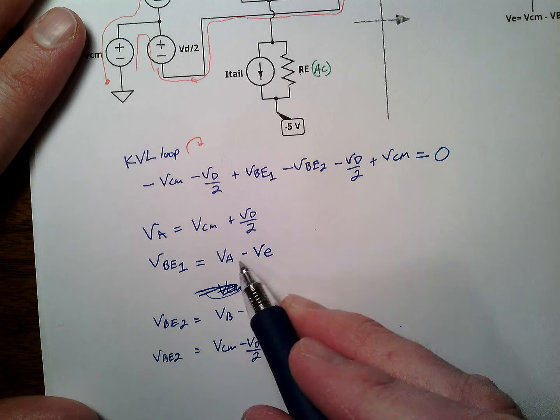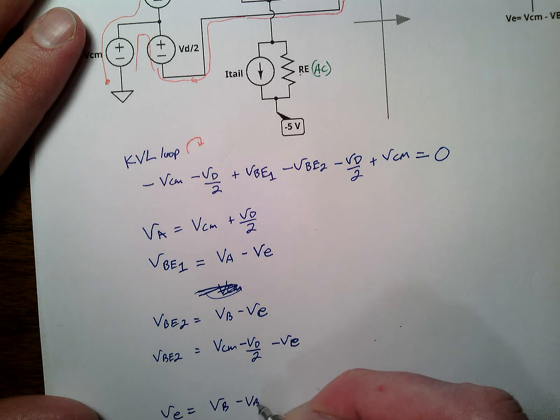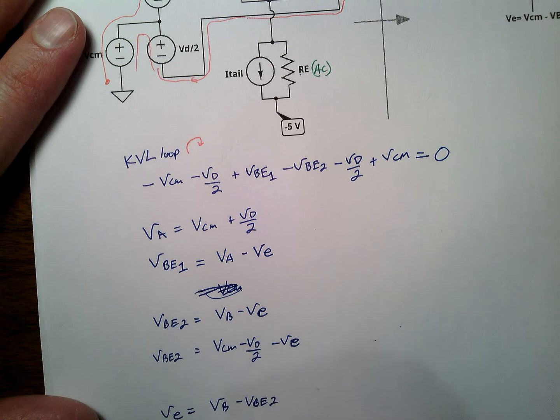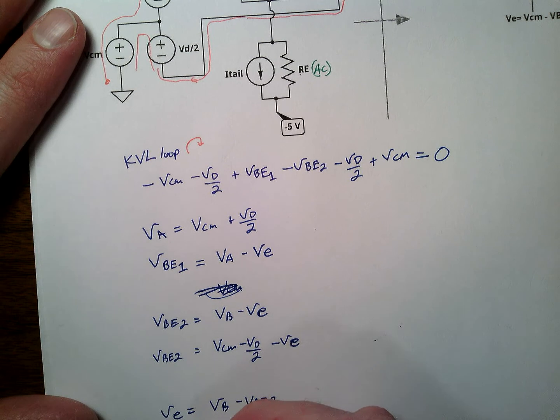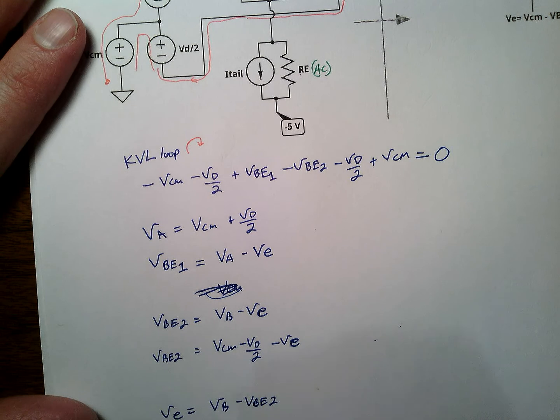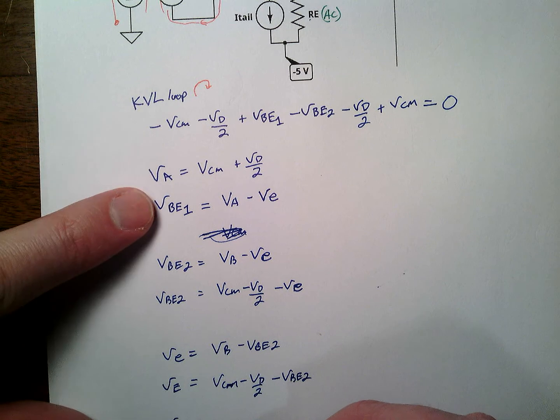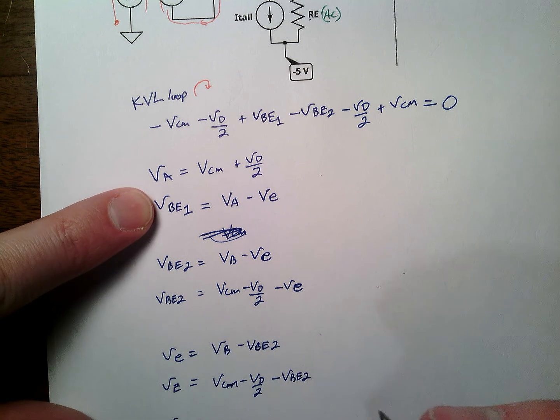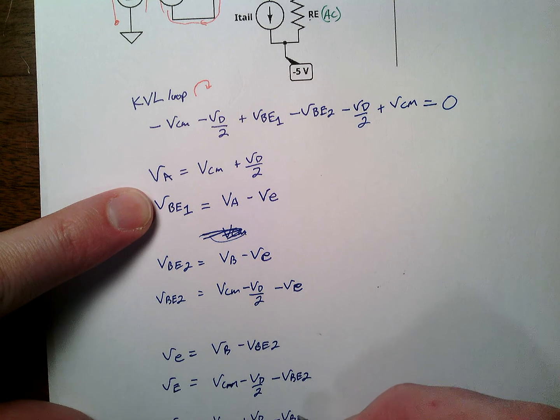We can do some substituting and we can say, well, VE is VB minus VBE2 or VE2. Very similar, we can say another version of VE is way up here. We have VCM, this, I didn't even write that down, did I? Okay. Alright, so we have this, this, and VCM plus VD over 2 minus VBE1.